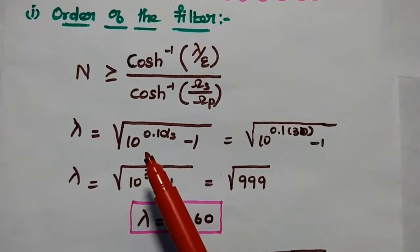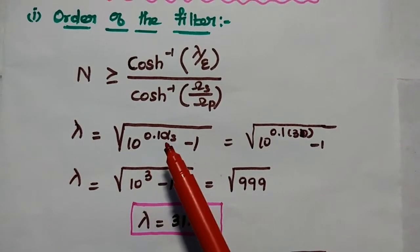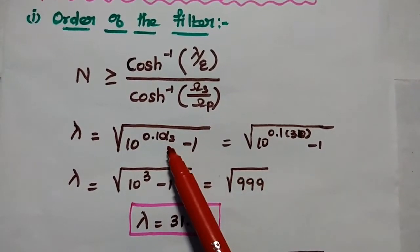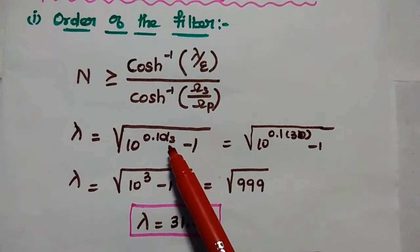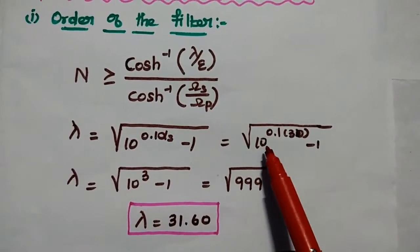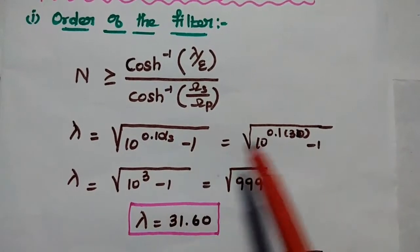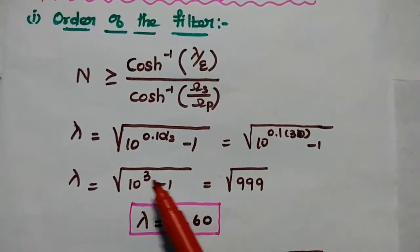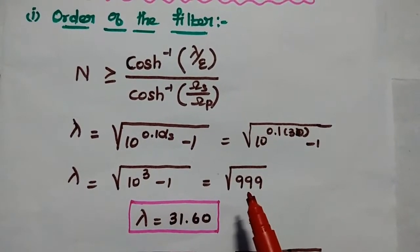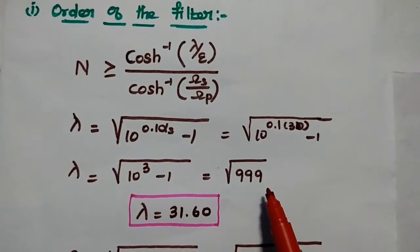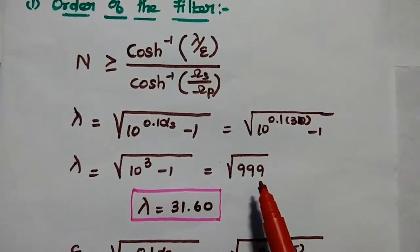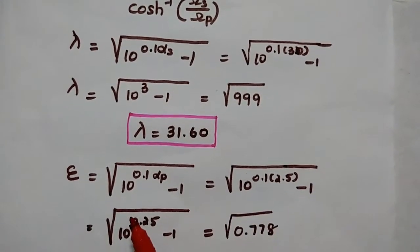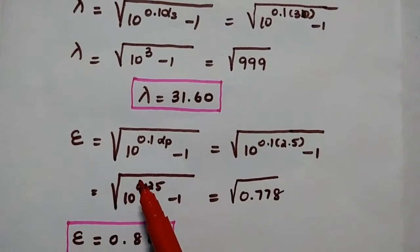Lambda is equal to the square root of (10^(0.1 × alpha_S) − 1). Substituting alpha_S = 30, we get the square root of (10^3 − 1), which is the square root of 999, equal to 31.60. That is the value of lambda.